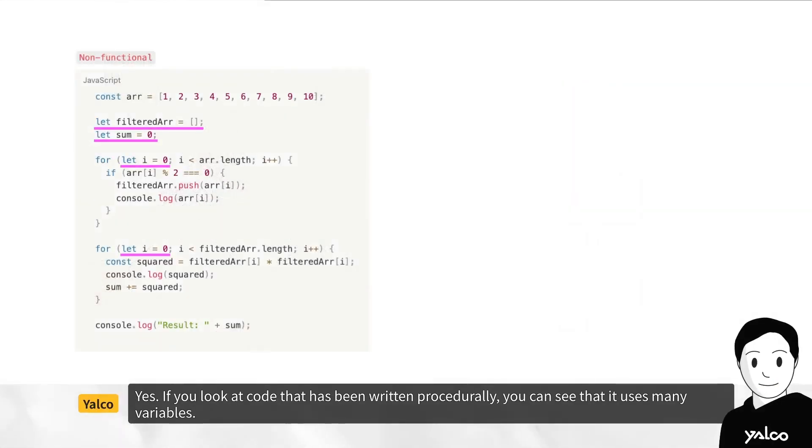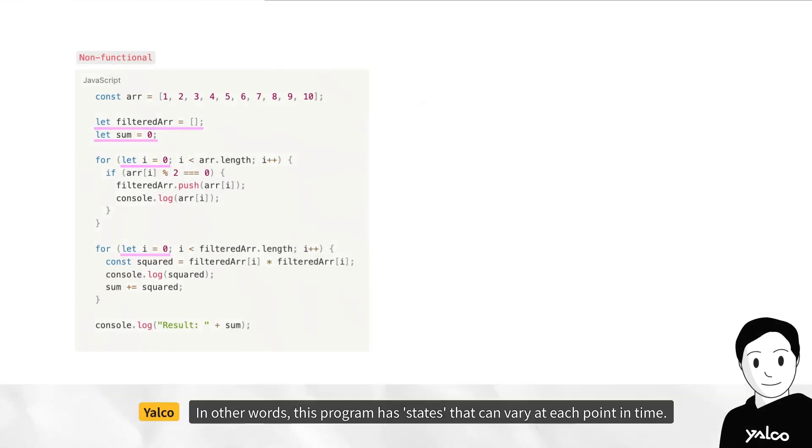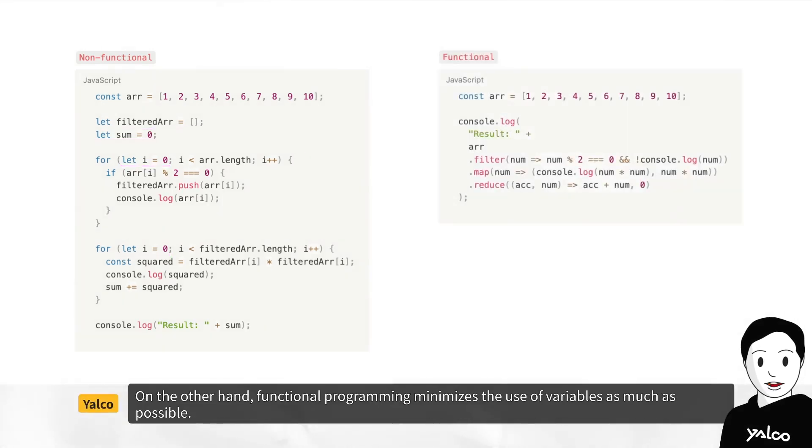If you look at code that has been written procedurally, you can see that it uses many variables. In other words, this program has states that can vary at each point in time. On the other hand, functional programming minimizes the use of variables as much as possible.